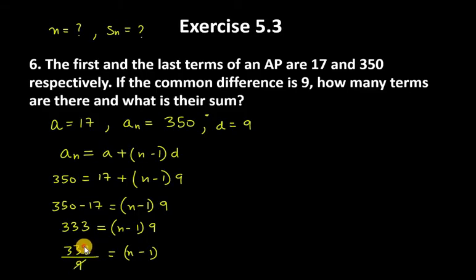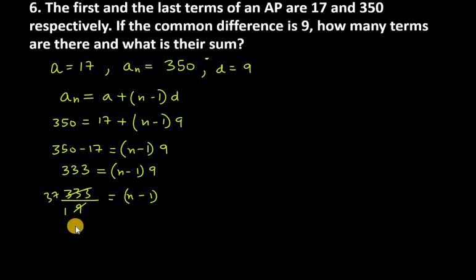So 37 equals N minus 1. When you add 1, it becomes N equals 38. Now you need to find their sum.